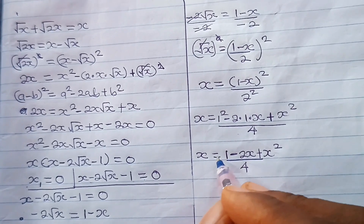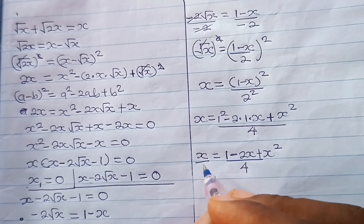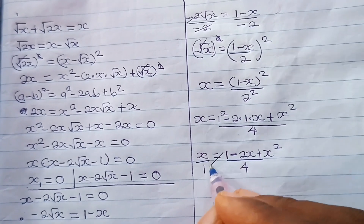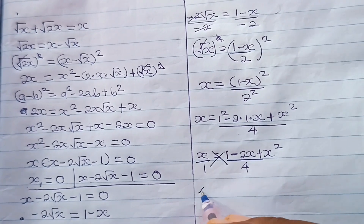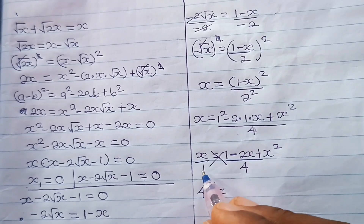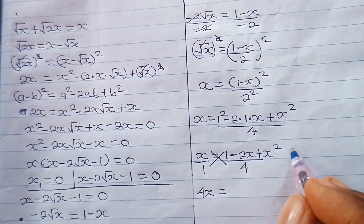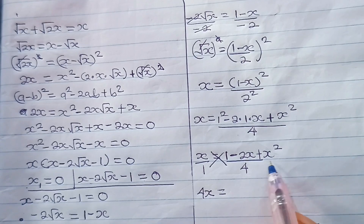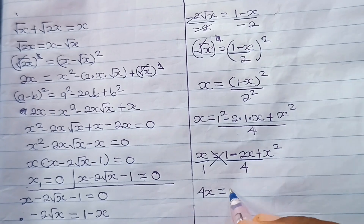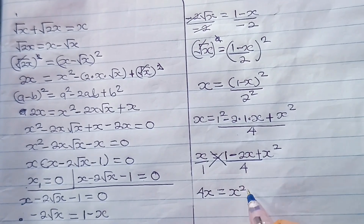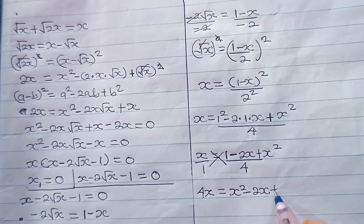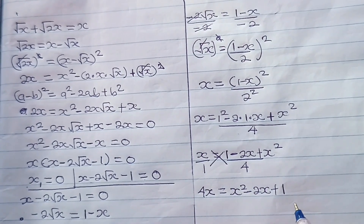Now at this point, we need to cross multiply. This is x divided by 1, so when we cross multiply, we have 4x is equal to x squared minus 2x plus 1. Let's write x squared first, then minus 2x, then plus 1.